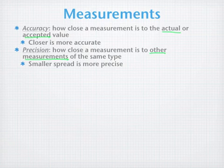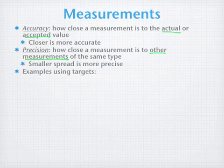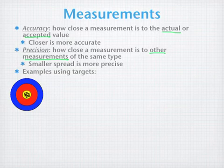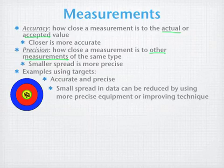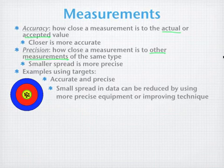In general, we're going to be dealing with numerical data, but for right now we're going to use targets as examples to illustrate the differences between accuracy and precision. In this first target, you can see that the hits are all grouped together in that center bullseye. This is both accurate and precise. In this case, there's a small spread in the data, and the small spread can be reduced by using more precise equipment or improving your technique. We'll talk more about precision and equipment later on in this series.